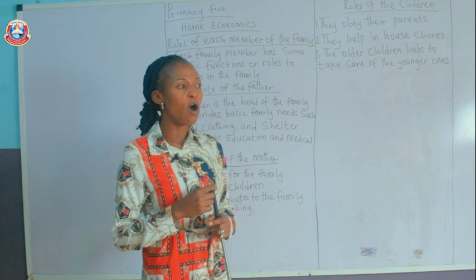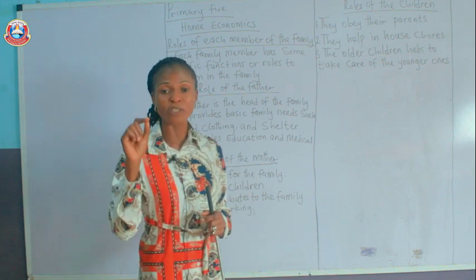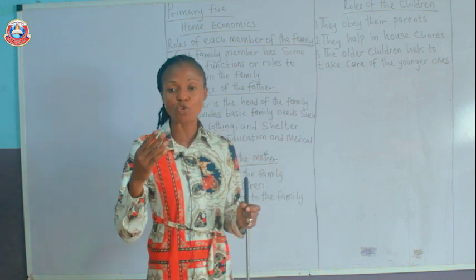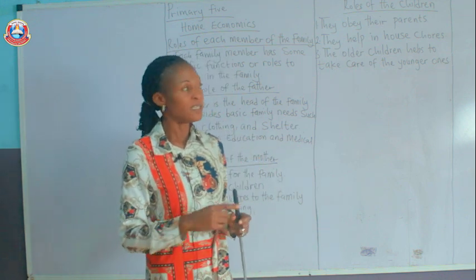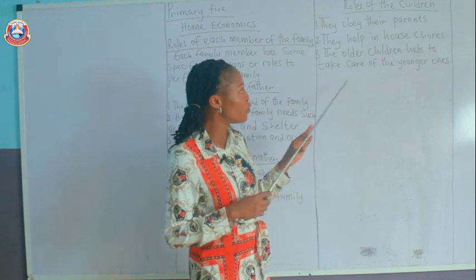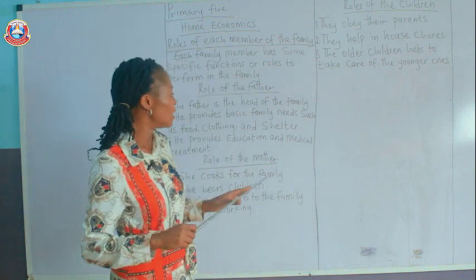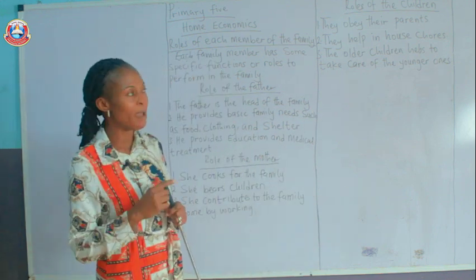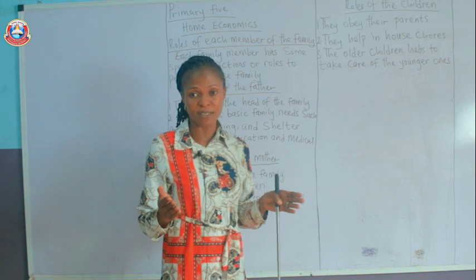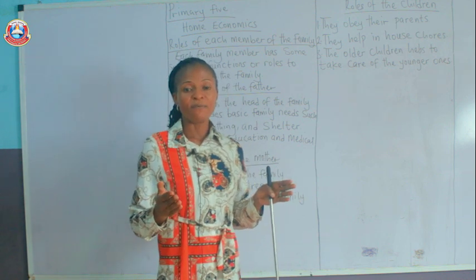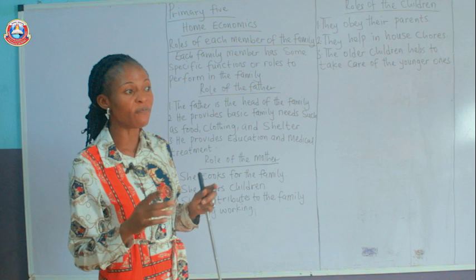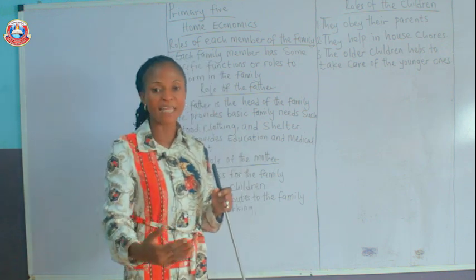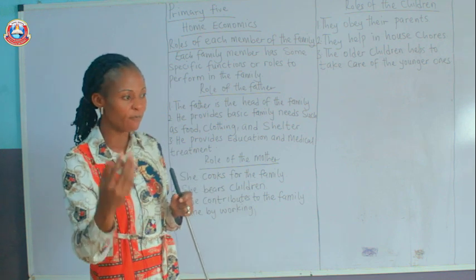Children are also to take care of their parents at old age. When your parents grow older and you are now adults, you are supposed to take care of your parents. These are some of the roles of the father, the mother, and the children. When each member of the family performs their duties very well, the family moves forward — there will be more peace and there will be more progress in the family.